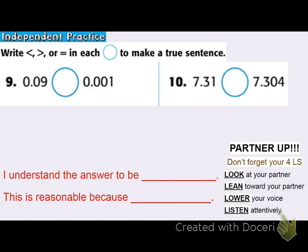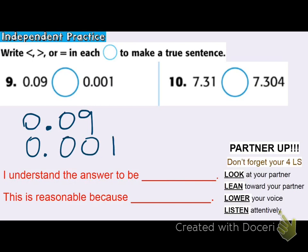Independent practice nine and ten — again, less than, greater than, or equal, we're comparing decimals. I'll do step one: line up that decimal. I can see I need one more zero here as a filler. Moving to step two: greatest place value is ones — they have the same value. I see a difference: 9 hundredths is larger than 0 hundredths. So 9 hundredths is greater than 1 thousandth.